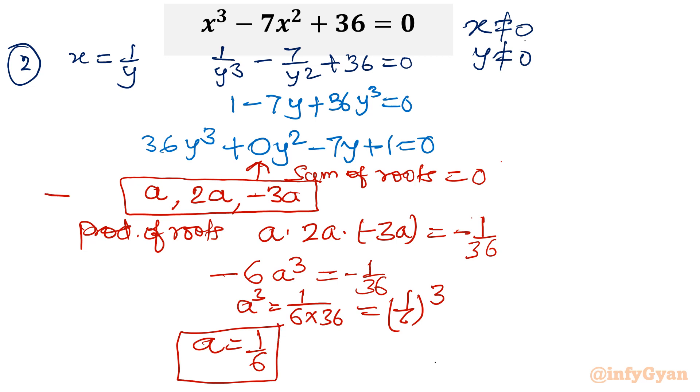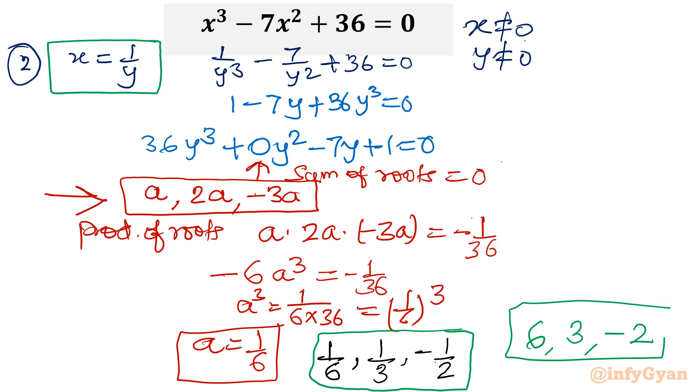Once a is 1/6, I can find all three roots immediately. The three roots will be 1/6, 1/3, and -1/2. Now, what was our substitution initially? Our answer roots would be 6, 3, and -2—take the reciprocal of the same roots. The answer is 6, 3, and -2.